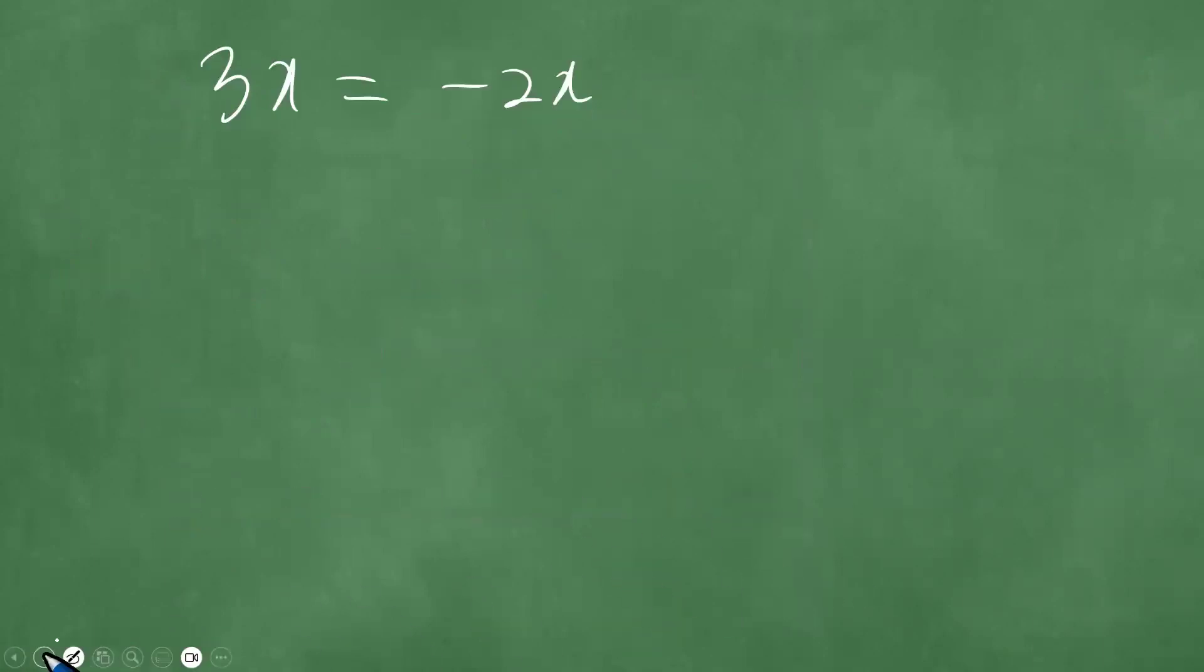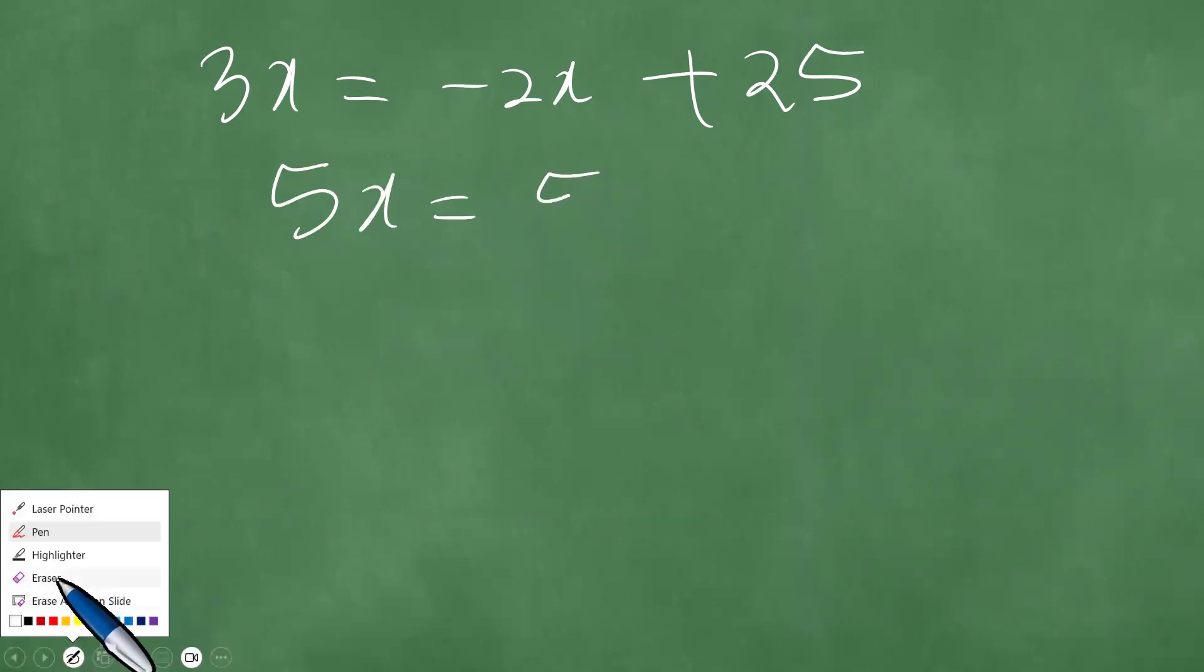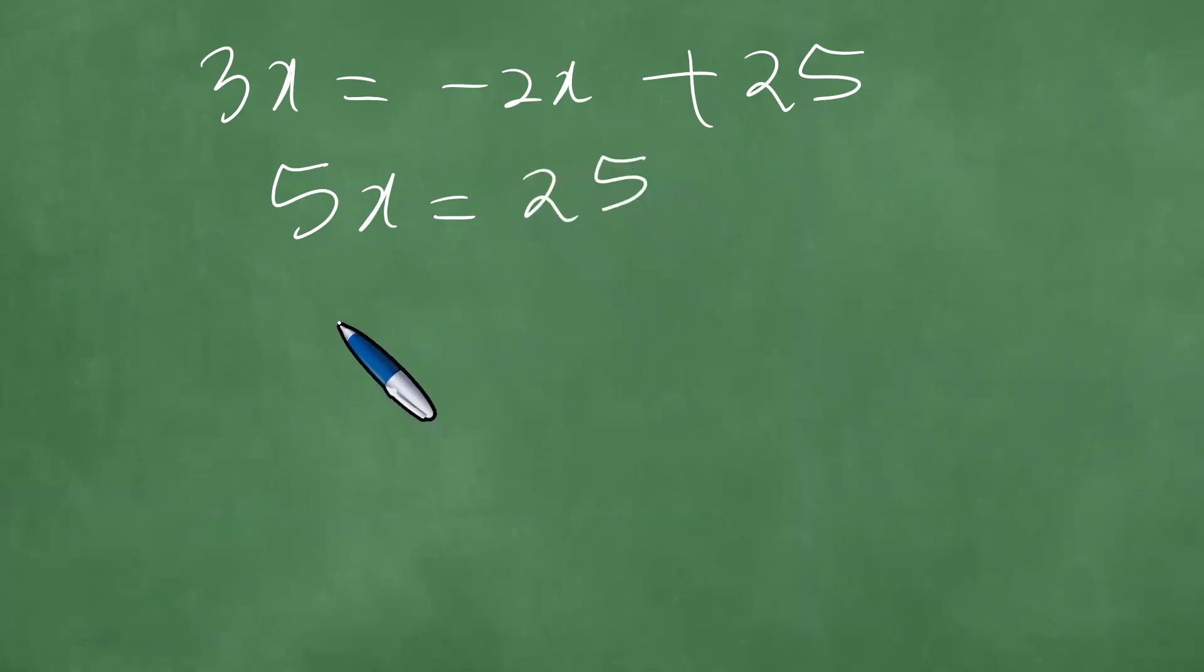And then 26 minus one is 25. You bring the 2x to the other side, getting 5x equals 25. Upon careful examination, we divide the left by 5. We divide the right also by 5, getting x equals 5.